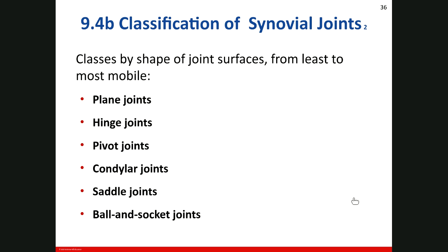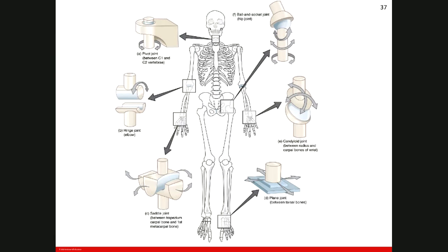In the picture you can see these different types of joint: the pivot joint, the hinge joint, the saddle joint, the plane joint, the condyloid or condylar joint, and the ball-and-socket joint. Now I want to talk about each of these joints in detail.